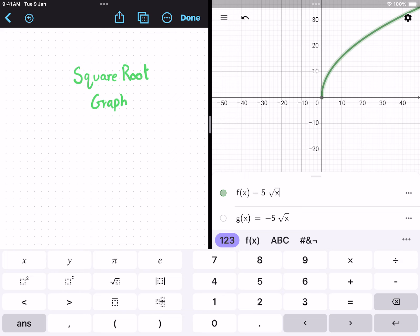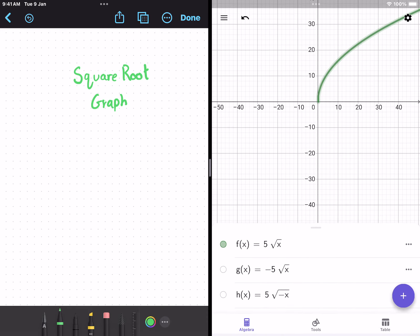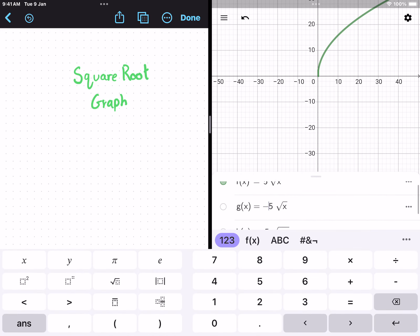Now, what if we wanted to reflect this on the x-axis? Then we'll have to add a negative sign in front of the function, and it'll get reflected, as you can see here.